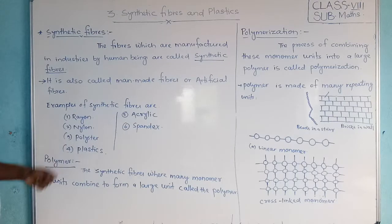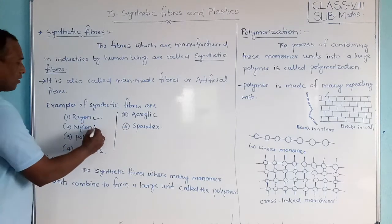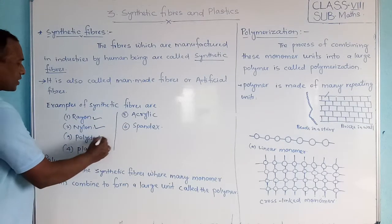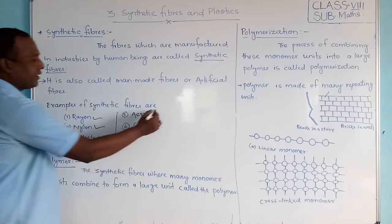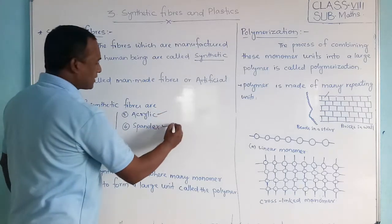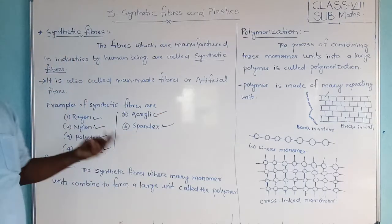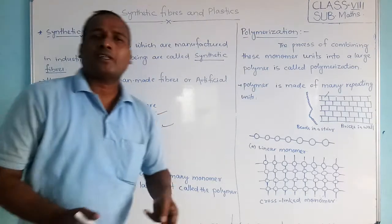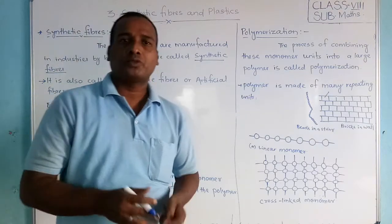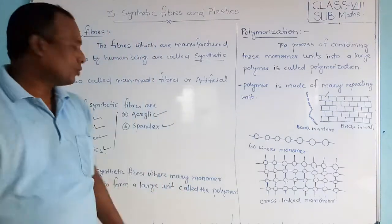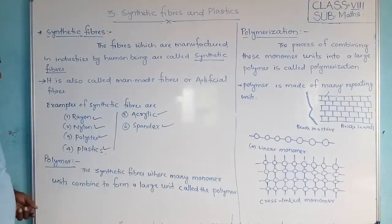And what are the examples? Rayon, nylon, polyester, acrylic, spandex — these are some important synthetic fibers which we commonly use.